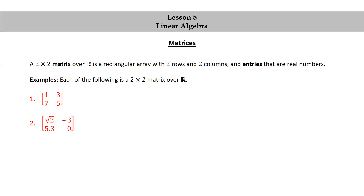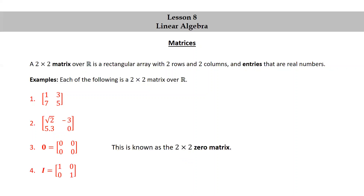The matrix with entries √2, -3, 5.3, 0. The matrix 0, which equals the matrix with all entries 0 — this is known as the 2x2 zero matrix. The matrix I equals the matrix 1, 0, 0, 1, where 1 is down the main diagonal and 0 is everywhere else. This is known as the 2x2 identity matrix.